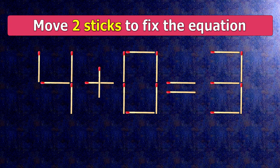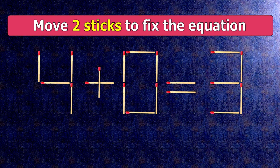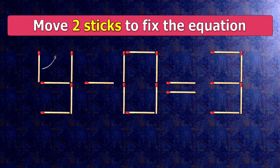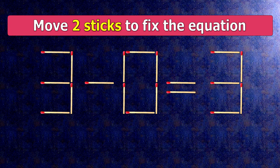To do this, all we need to do is move this match right here and this match right here. Now, when we check the condition, 3 minus 0 is 3.